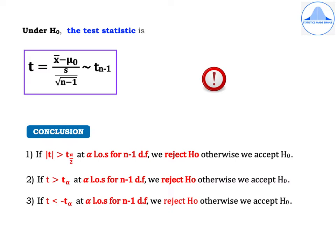Now the conclusions are: if we are testing a null hypothesis against a two-tail alternative, you have to check if modulus of t is greater than t alpha by 2 at alpha level of significance for n minus 1 degrees of freedom. If this condition is satisfied we reject H0, otherwise we accept H0. Note that t alpha by 2 value can be found from the statistical tables under t-test for a two-tailed test.